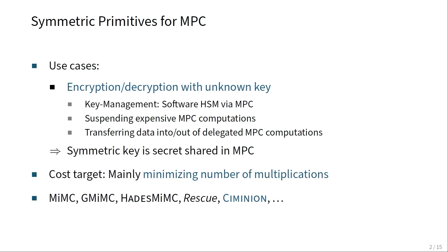There have been many symmetric primitives already designed in the literature which try to be efficient in these or similar use cases — for example, MIMSI, G-MIMSI, Hardest-MIMSI, RESCU, and Syminian. The cost metric for which these symmetric primitives were optimized is usually minimizing the total number of multiplications in the design.